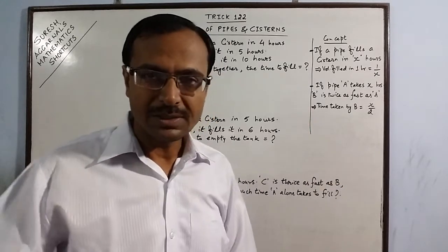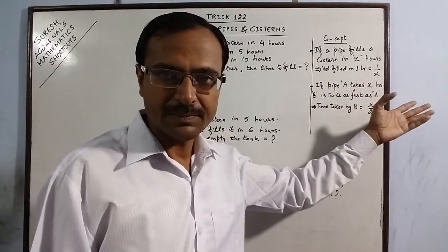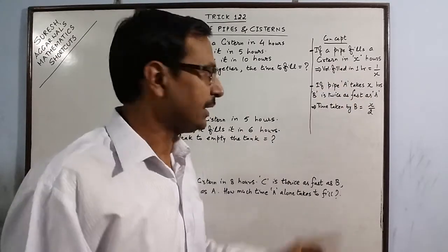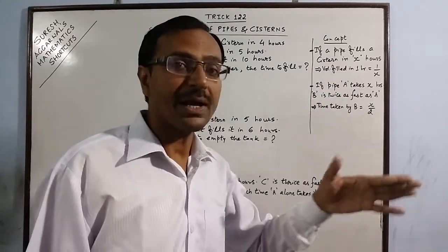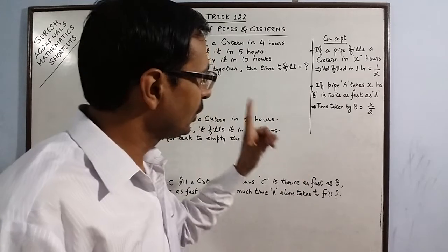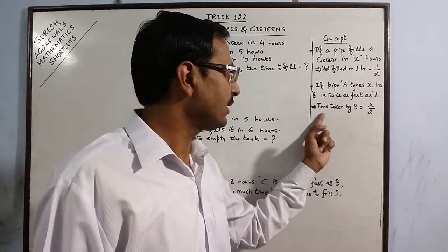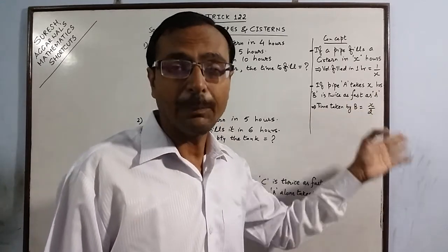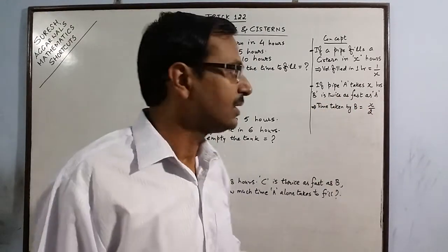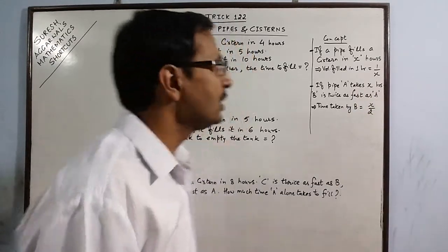Second concept: when comparing pipes, say pipe A takes X hours and pipe B is twice as fast as A. If it is faster, it consumes lesser time. So time taken by B will be X/2 — that is half of A's time. Remember, it is not 2X, it is X/2.